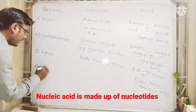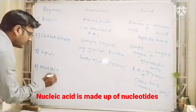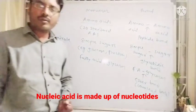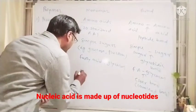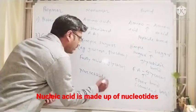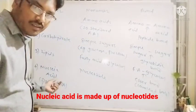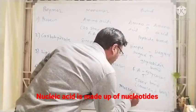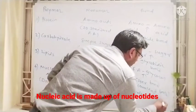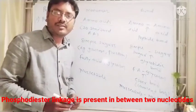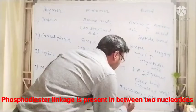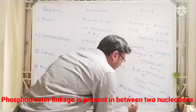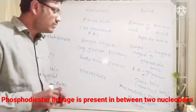The next one is nucleic acid. Examples are DNA — deoxyribose nucleic acid — or ribose nucleic acid (RNA). They are made up of the monomer nucleotide. The two nucleotides are joined with each other by the phosphodiester linkage, which is present between two successive nucleotides.